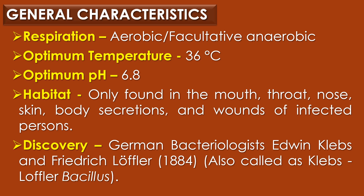The mode of respiration observed in Corynebacterium diphtheriae is aerobic respiration or facultatively anaerobic respiration. The optimum temperature required for cultivation is 36 degrees Celsius and optimum pH is 6.8. Regarding habitat, Corynebacterium diphtheriae is only found in the mouth, throat, nose, skin, body secretions, and wounds of infected persons.